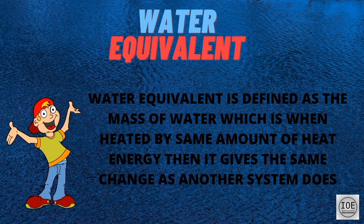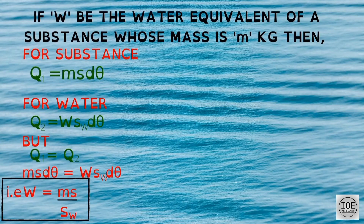Water equivalent is defined as the mass of water which, when heated by the same amount of heat energy, gives the same temperature change as another system does. If W is the water equivalent of a substance whose mass is M kg, then for the substance: heat energy gained equals M times S times D-theta. For water: heat energy gained equals W times S-water times D-theta. For equal amounts of heat, Q1 equals Q2, and ultimately we get: W equals M times S divided by S-water, where S-water is the specific heat capacity of water.